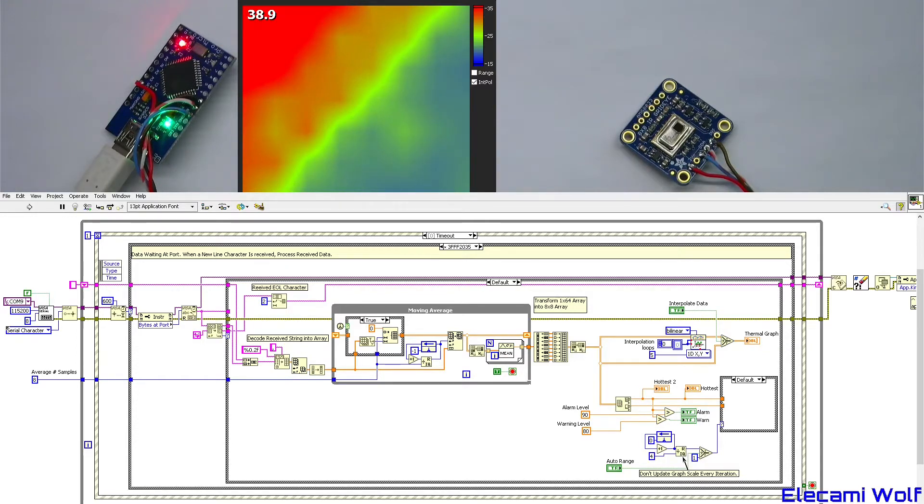An intensity graph is used to provide the usual thermal camera type display. Bytes received through the serial port are put into a shift register. Once a carriage return is received, a complete frame is sent to process and display.